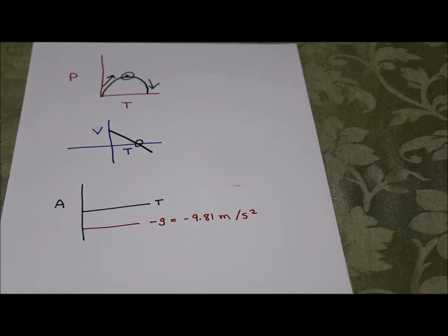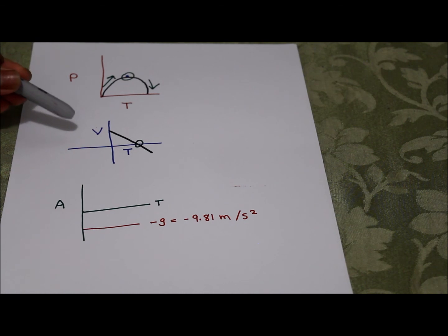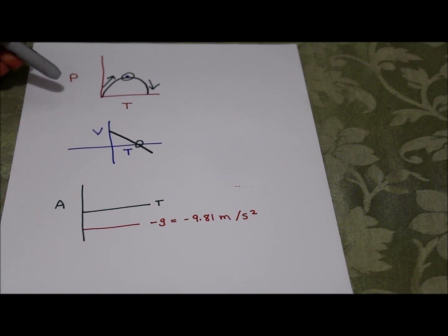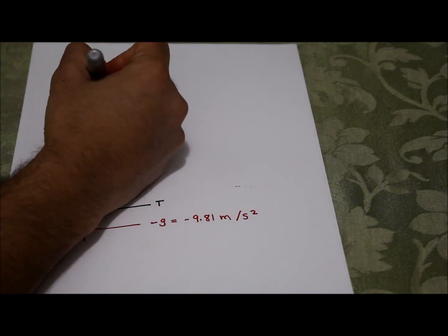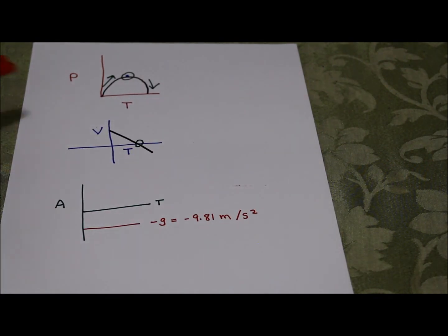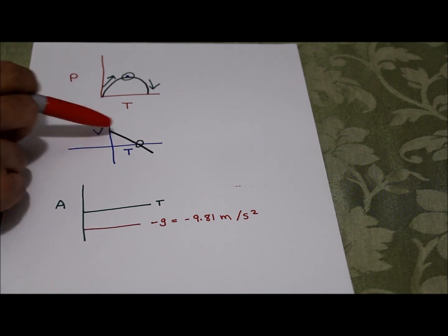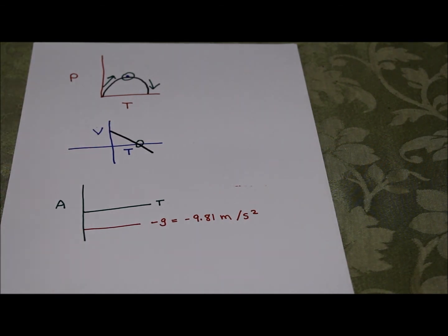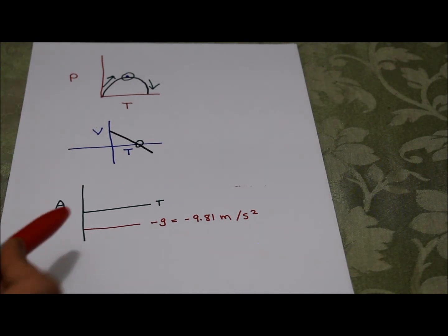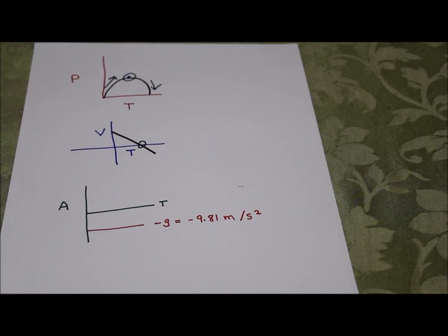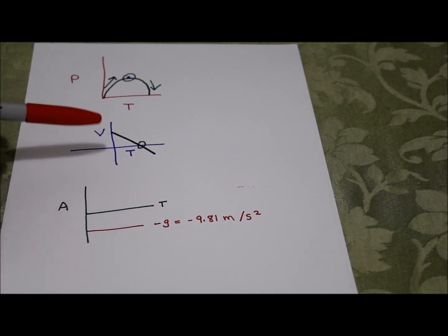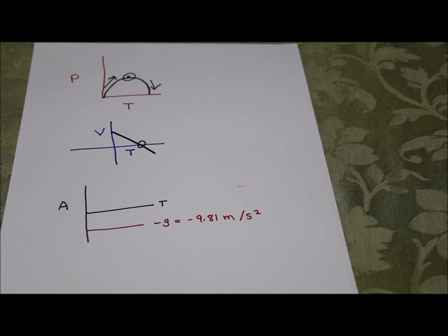Looking at the relationship between all three graphs: the velocity versus time graph represents the change in the slope of the position graph, and the acceleration graph represents the change in the velocity graph. When the position graph is curved, there is usually acceleration. When the velocity graph is linear, it's a constant acceleration. If the velocity graph were curved, the acceleration graph would be linear. But since there's uniform acceleration, we have a horizontal line for acceleration.